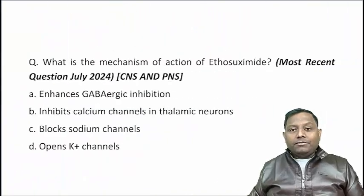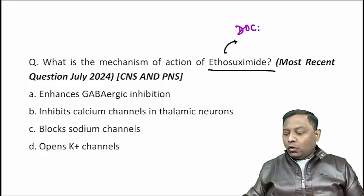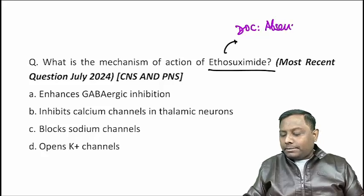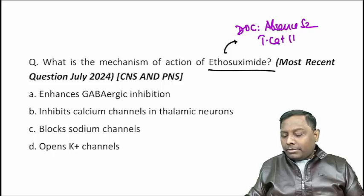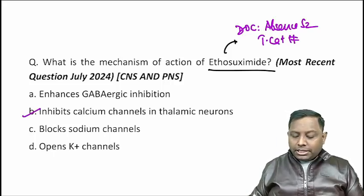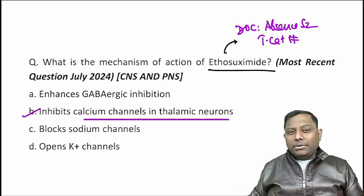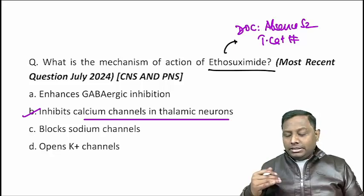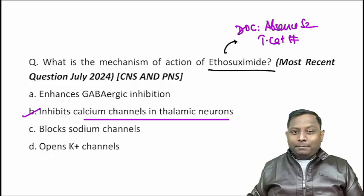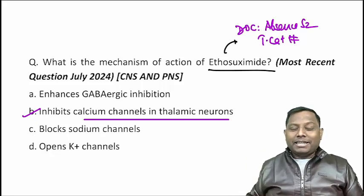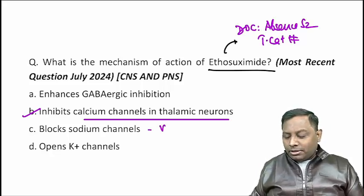What is the mechanism of ethosuximide? Ethosuximide is the drug of choice in patients with absence seizures. At the thalamic level, it acts as a transient T-type calcium channel blocker. Among the given choices, the answer is thalamic calcium channel blocker. It does not enhance GABAergic inhibition — in fact, GABA inhibitors should be avoided in absence seizures because the firing frequency is already very low, at 3 Hz per second compared to a normal 7–8 Hz. It also does not block sodium channels.